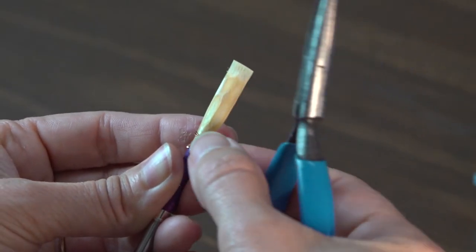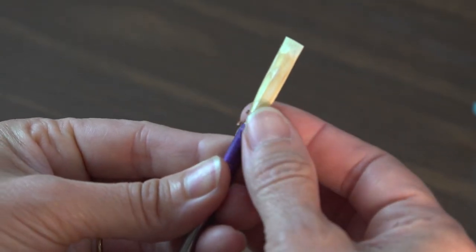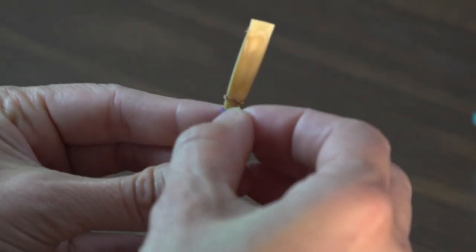As the reed dries, the cane will shrink slightly and the wire may come loose. When you soak the reed next time, if the wire is not secure, gently reposition it.